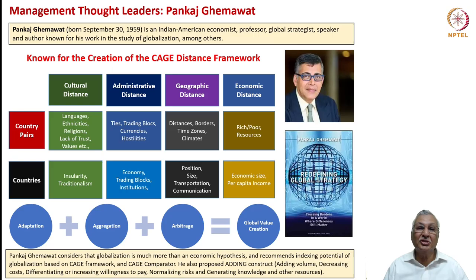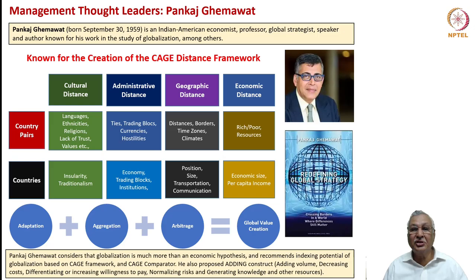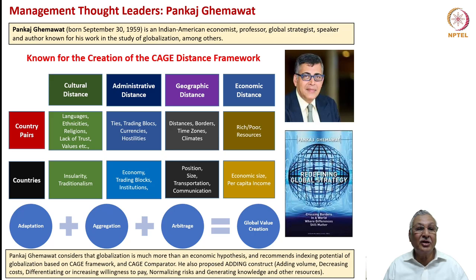Pankaj Ghemawat is a strategist who focused on global strategy. He initially worked with Professor Michael Porter in competitive strategy but over time developed his own constructs primarily based on globalization. He said companies erroneously think that proximity to a particular nation determines competitive advantage in global strategy. Instead, he argued that countries and firms are distanced by certain factors, and proposed a four-factor CAGE Distance Framework: Cultural distance, Administrative distance, Geographic distance, and Economic distance.